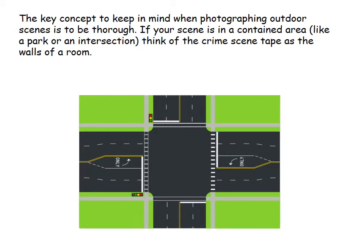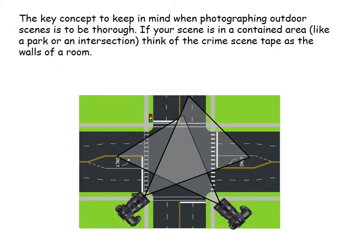Let's talk about accident scenes. Accident scenes are probably the most common outdoor scene that crime scene photographers run into, and the key concept to keep in mind when photographing these scenes is to be thorough. If your scene is contained in an area like an intersection, or a park that has crime scene tape creating a perimeter, you want to think of that crime scene tape as the walls of the room. So if an accident occurred in the middle of an intersection, you're going to want to four-point it just the same way you would an indoor crime scene.